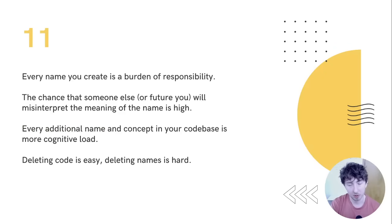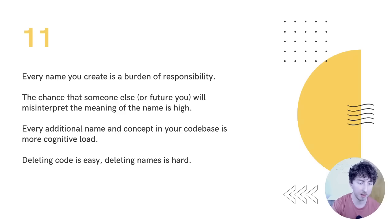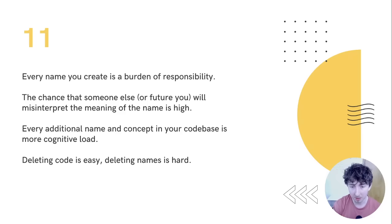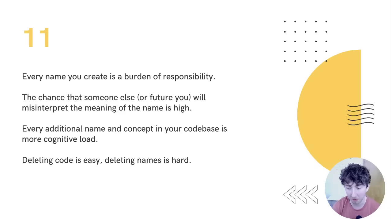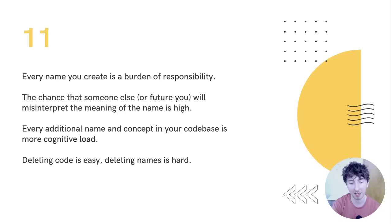Every name you create is a burden of responsibility. Every additional name increases the complexity of the code base and the chance that someone — including your future self — will misinterpret it. Every additional name is more cognitive load. People say deleting or modifying code is hard, but actually deleting code is easy — it's deleting names that's hard, because you have to figure out how those names fit into other naming schemes in the code base. If you can read code, you can generally understand and maintain it much more easily.